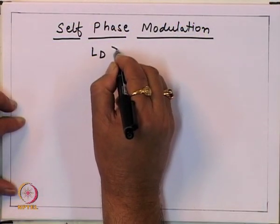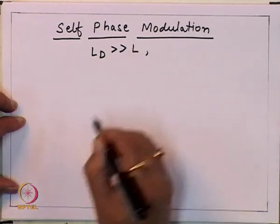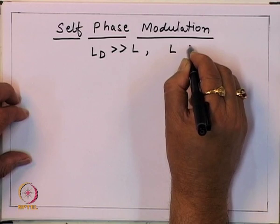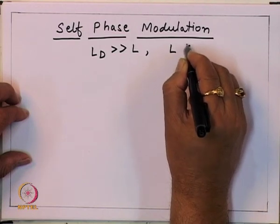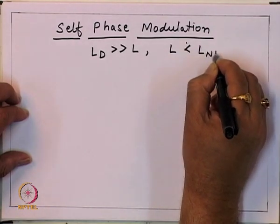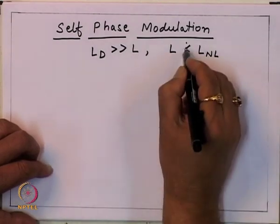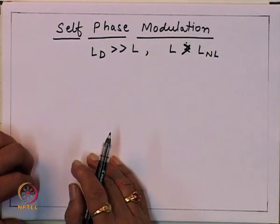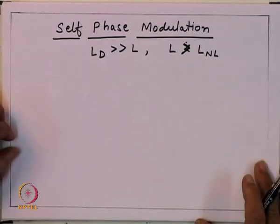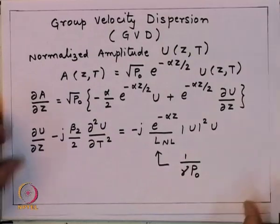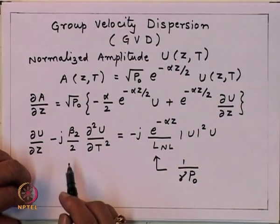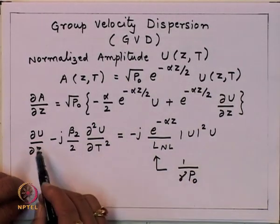Here, since we are interested only in self-phase modulation, we have the dispersion length much greater than the physical length of the fiber, and the physical length is less than the non-linearity length — meaning the non-linearity is present but dispersion is not. If we look at the non-linear Schrödinger equation with the normalized parameters defined last time, we have the normalized pulse function and the non-linear Schrödinger equation.